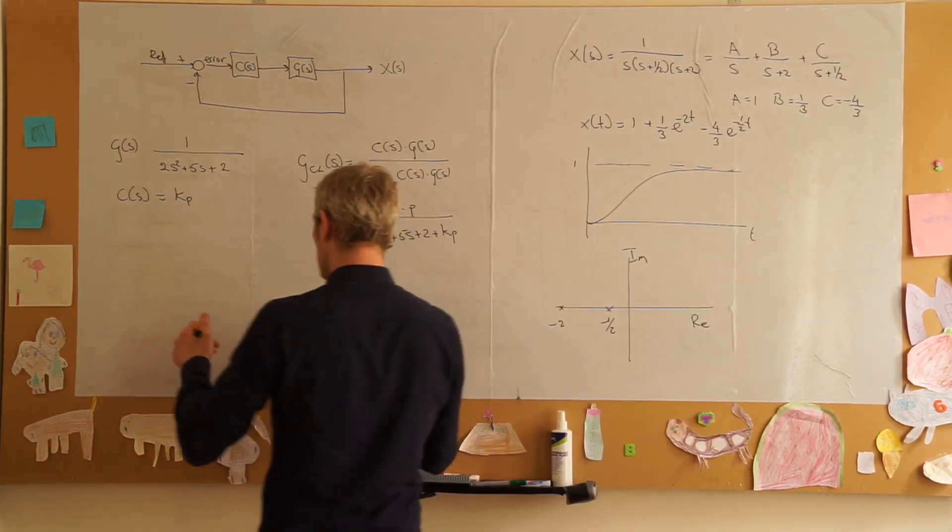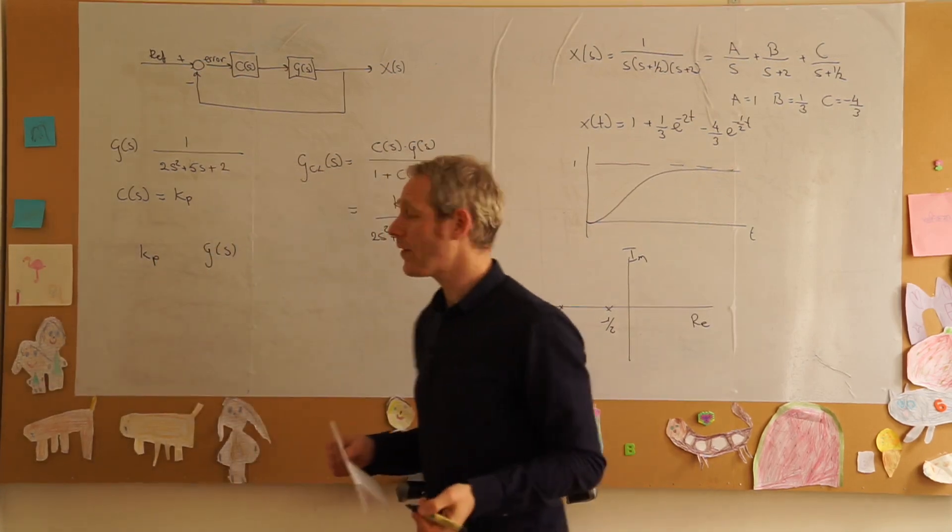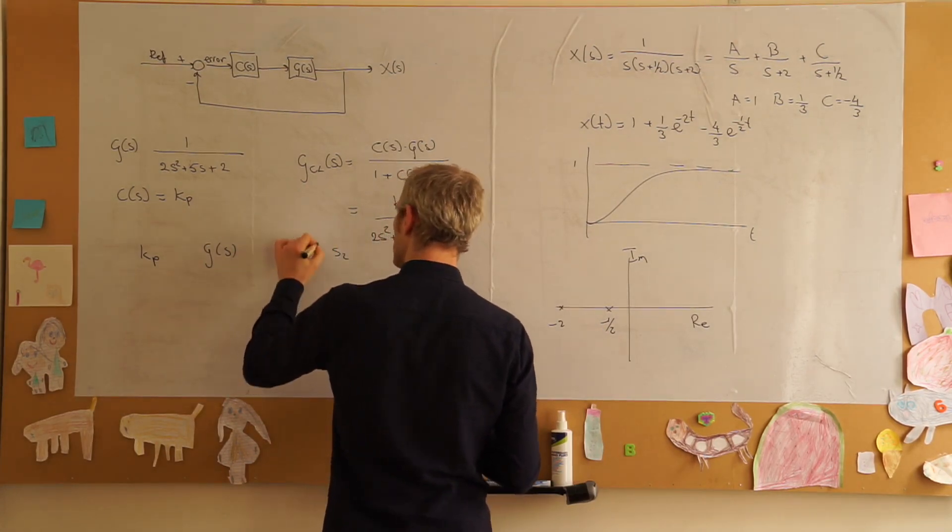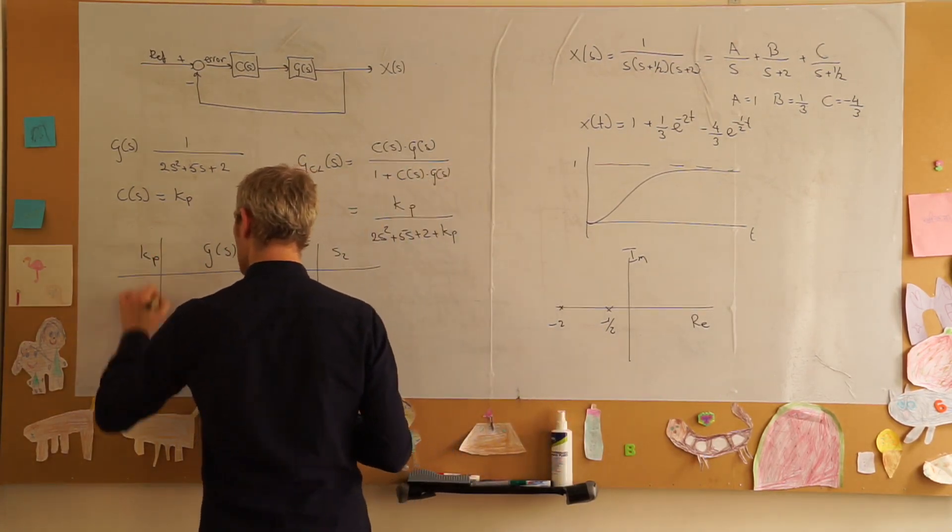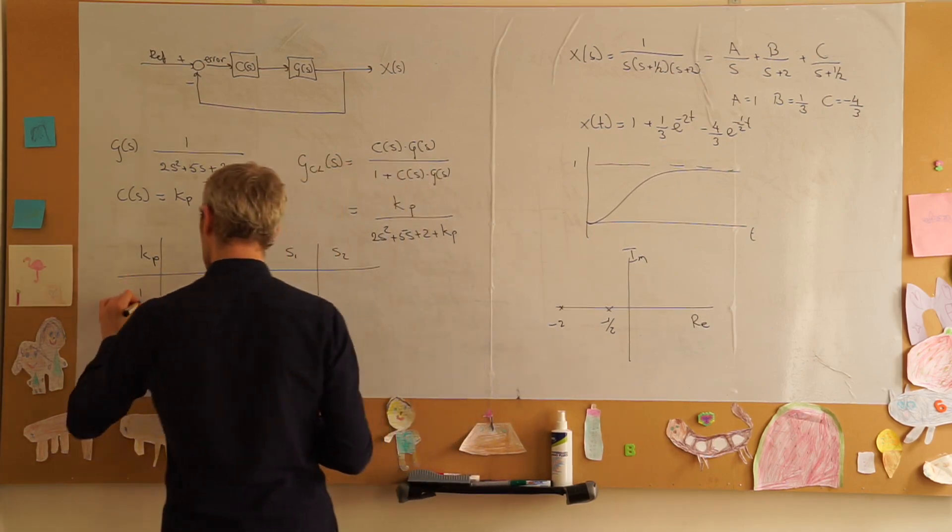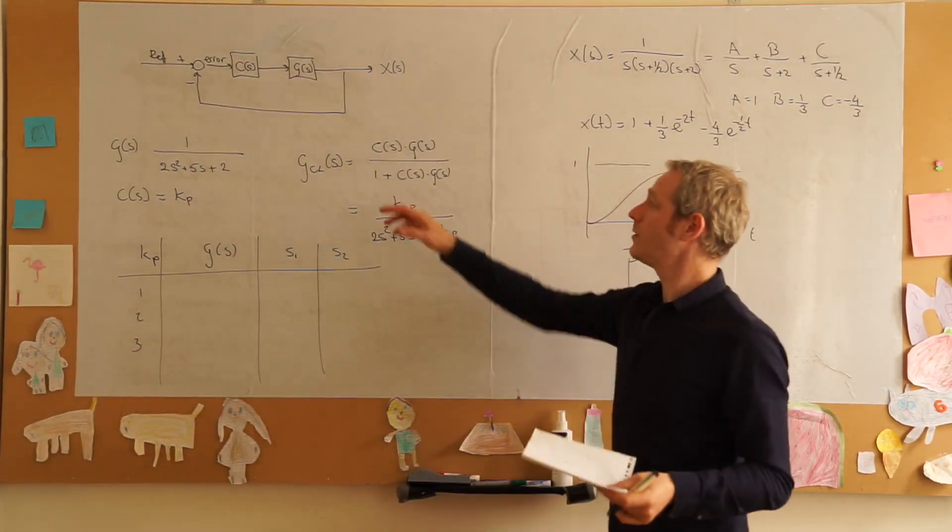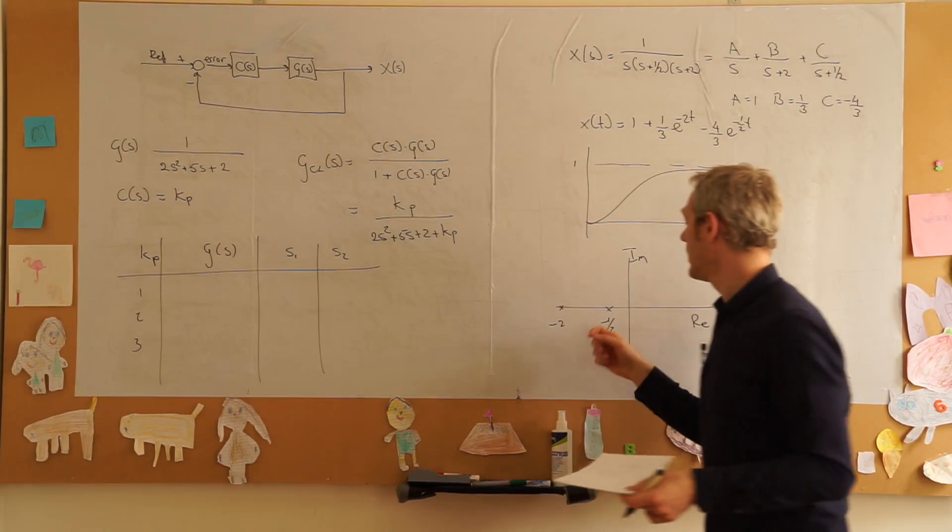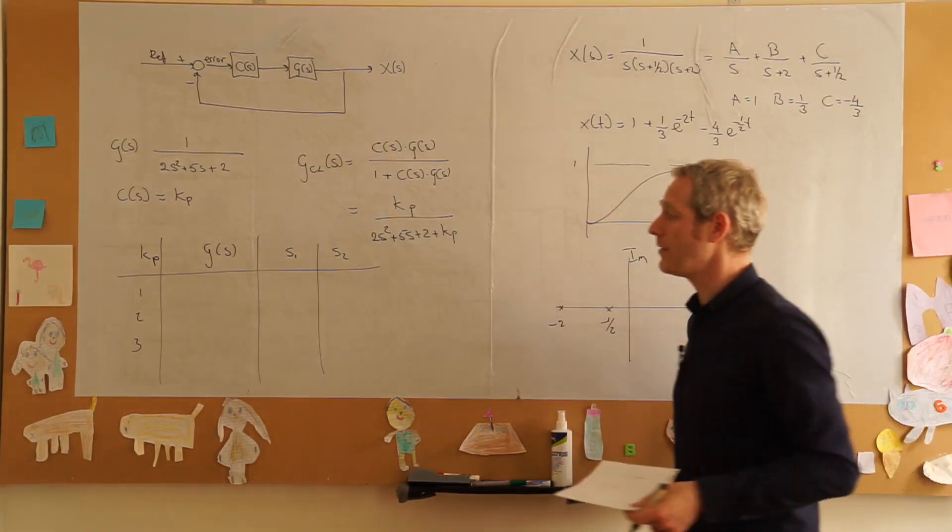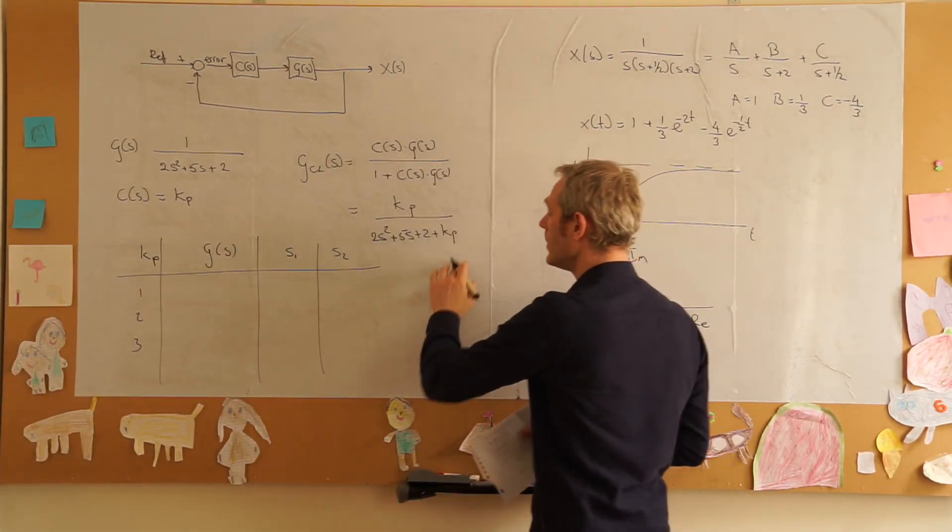What we want to do is look at different values of k p, the resulting transfer function and the two poles for values of one, two and three. We already know the situation where we don't have a feedback loop and we don't have a controller, the two poles are there.